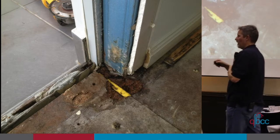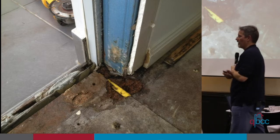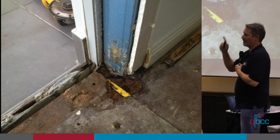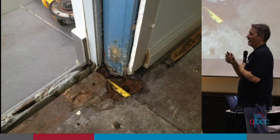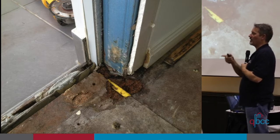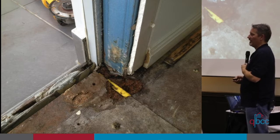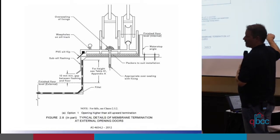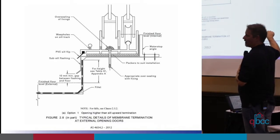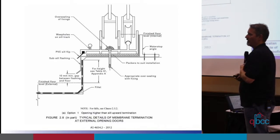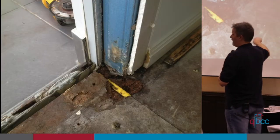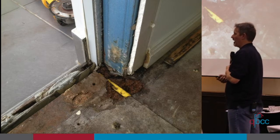Cast your mind back to when I said 'remember this bit' — particle board flooring shall not be used as a substrate for external waterproofing. Where does the external waterproofing finish? It finishes at that water stop angle. So according to the standard, the area under the door can never be particle board. Particle board shall not be used as a substrate for external waterproofing — so you could do that section with FC sheet the same thickness as particle board if you wanted to.